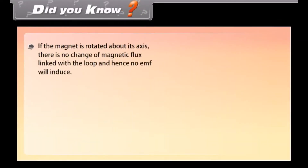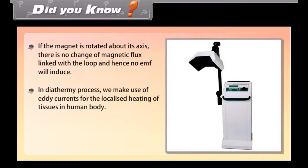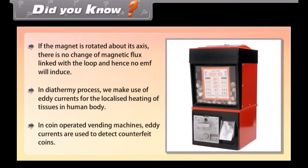Did you know? If the magnet is rotated about its own axis, there is no change of magnetic flux linked with the loop and hence no EMF will be induced. In the diathermy process, eddy currents are used for the localized heating of tissues in the human body. In coin-operated vending machines, eddy currents are used to detect counterfeit coins.